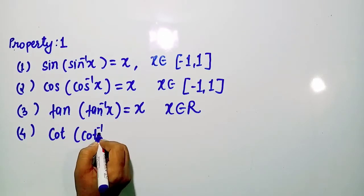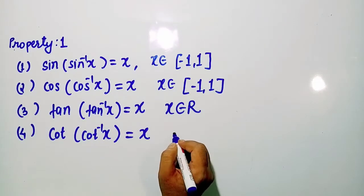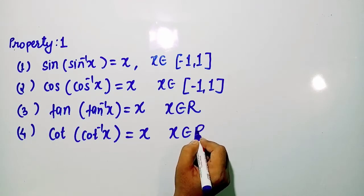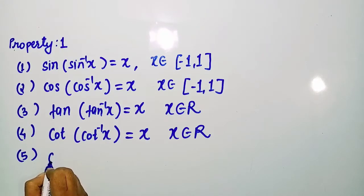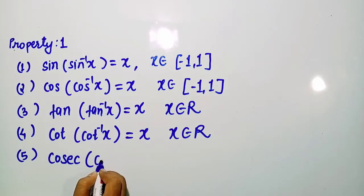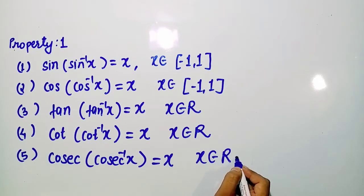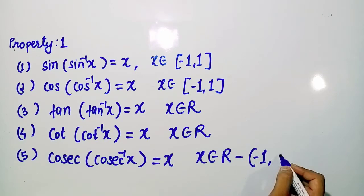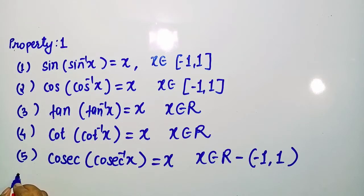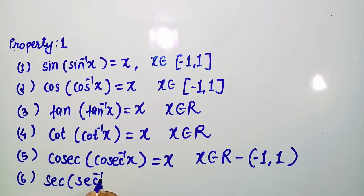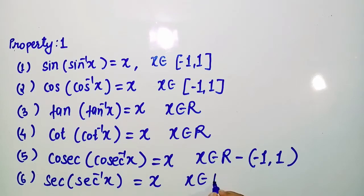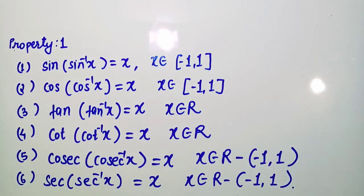Cot(cot⁻¹ x) = x, where x belongs to real numbers. Fifth, cosec(cosec⁻¹ x) = x, where x belongs to real numbers excluding the interval (−1, 1). Next, sec(sec⁻¹ x) = x, where x belongs to real numbers excluding the open interval (−1, 1).